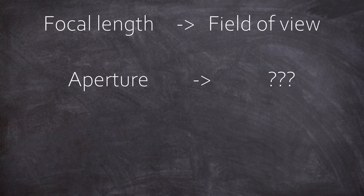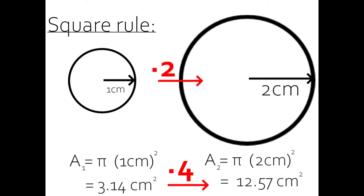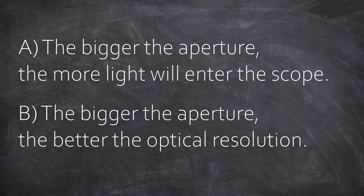We can focus on two main points. A: the bigger the aperture, the more light will enter the scope. For fainter objects you need more light — in this case, the bigger the better. An important fact: if you double the aperture, you actually quadruple the area of your optical component, and thus the amount of light you collect. It's the square rule.